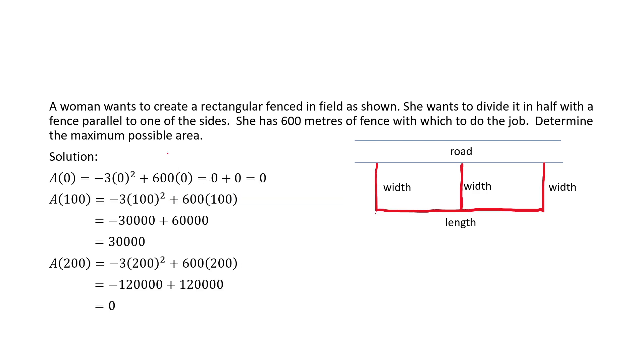Then we take our domain end values of 0 and 200, as well as the value of 100 that's in between. We sub each of them into the area formula, and we see that when the width is 100, the area of 30,000 is a maximum. So the maximum possible area is 30,000 meters squared. And this particular question did not ask us for dimensions. It just asked for the maximum possible area, and so we have answered the question.